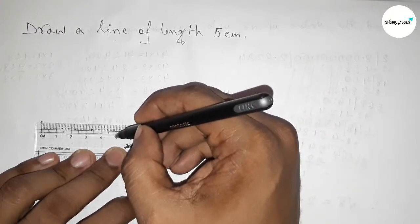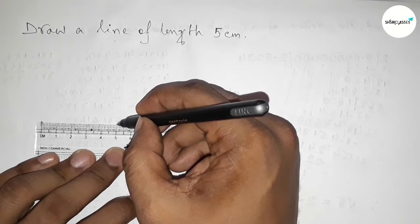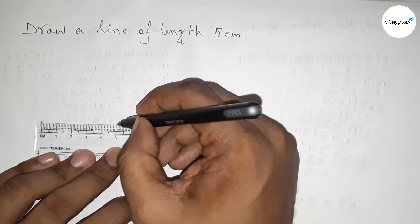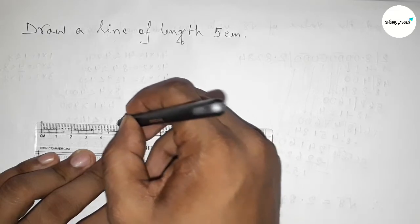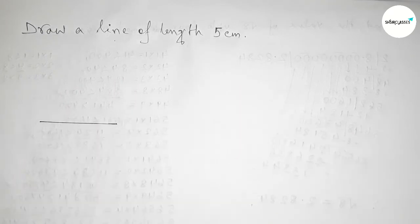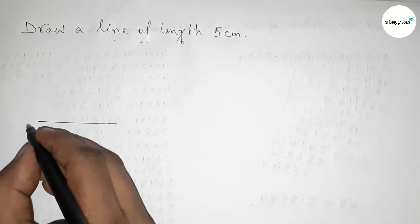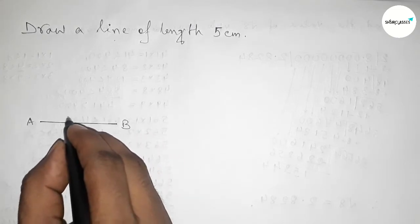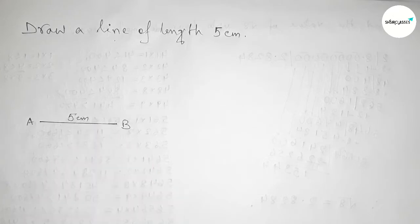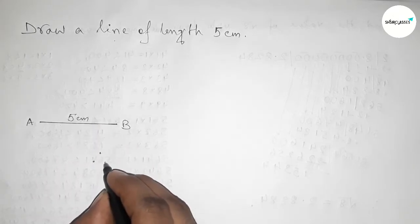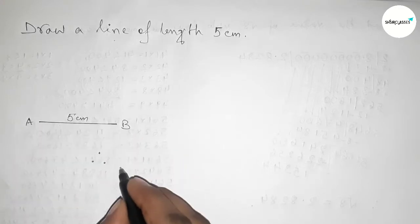So this is 5, so marking this. And now first joining this, and here taking point here A and here B. So AB is a line of length 5 centimeter.